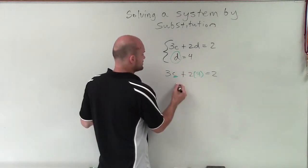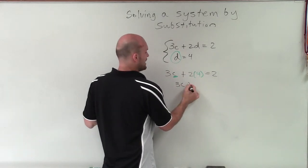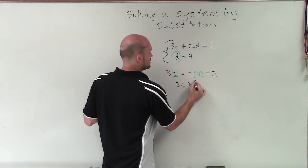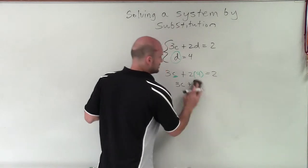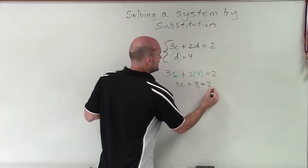So now I just need to simplify. I have 3c plus 2 times 4 is going to be 8. That's a horrible 8, let me fix that. Equals 2.